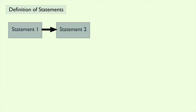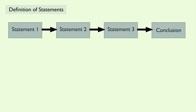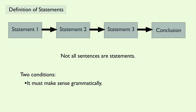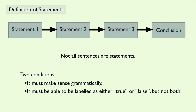In mathematics, when we want to prove that something is true, we link together a bunch of statements until we arrive at the desired conclusion. But not all sentences are statements. Each sentence must satisfy two conditions to be considered a statement: first, it must make sense grammatically, and second, it must be able to be labeled as either true or false, but not both. The label assigned to the statement is called its truth value.